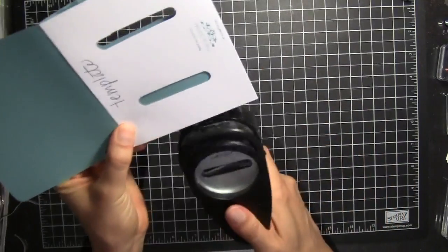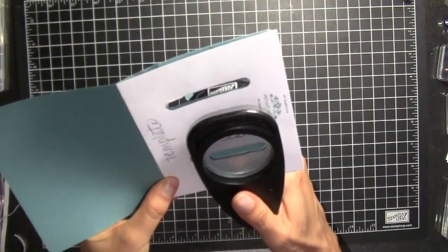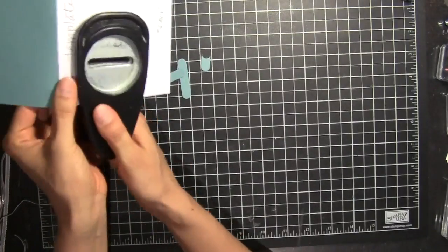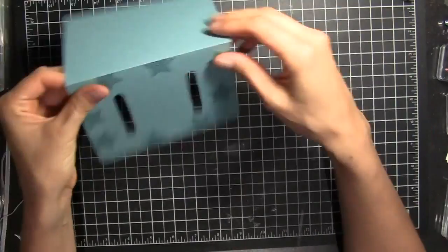Then I'm going to go ahead and do that on the other side. Same thing. Punch it. Scoot it all the way in. Then punch it. Scoot it over a little bit and punch it again. So we have our little guides.